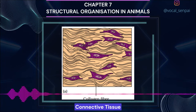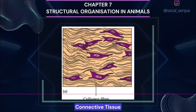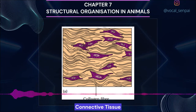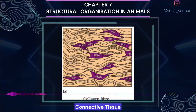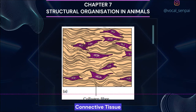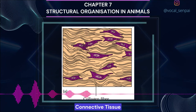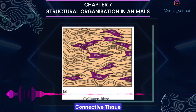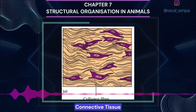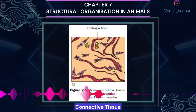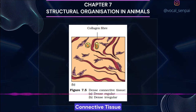Loose connective tissue has cells and fibers loosely arranged in a semi-fluid ground substance; for example, areolar tissue present beneath the skin (figure 7.4), which often serves as a support framework for epithelium. It contains fibroblasts, macrophages and mast cells. Adipose tissue is another type of loose connective tissue located mainly beneath the skin. The cells of this tissue are specialized to store fats; excess nutrients not used immediately are converted into fats and stored in this tissue.